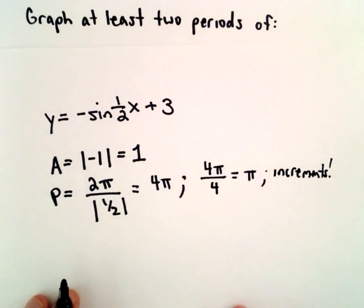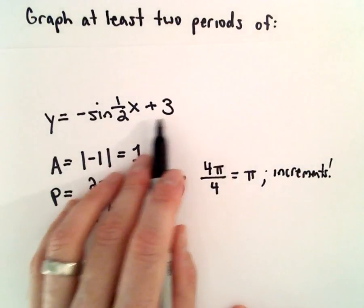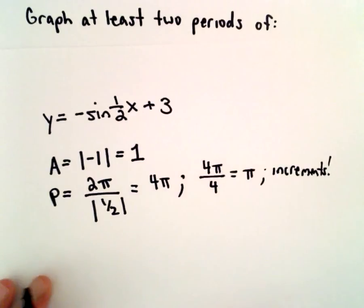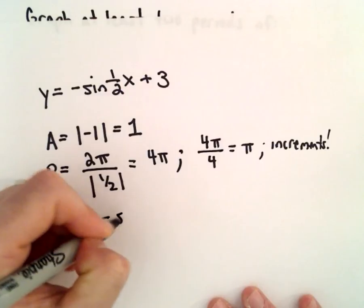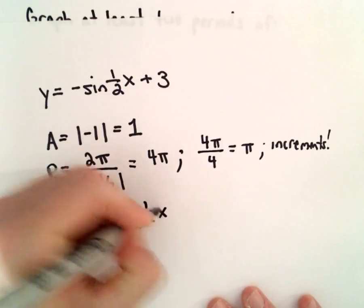Let's see, what else do we want to think about here? So we certainly have this vertical shift of plus 3, and we'll come back to that. So I think what I'm going to first do is actually graph y equals negative sine of just 1 half x.